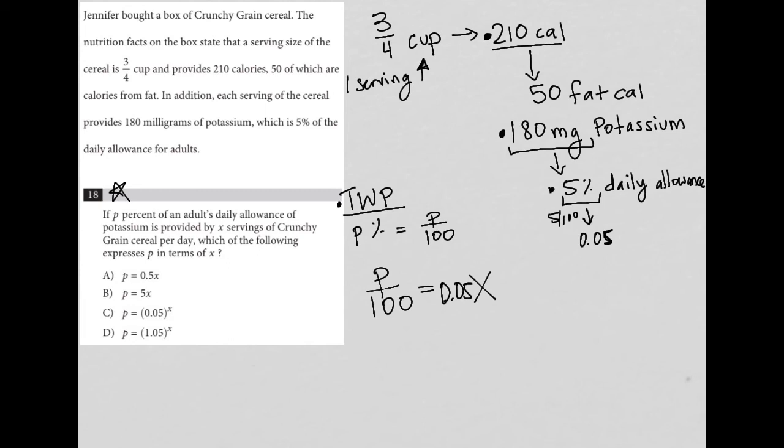So here is the connection between all the information we're provided with and then also a translation of the actual equation that results by reading this question. So I'll start from the beginning again. If P% of an adult's daily allowance of potassium is provided by X servings of crunchy grain cereal per day,